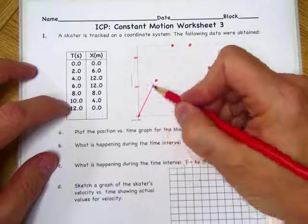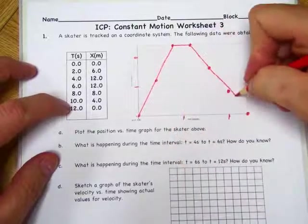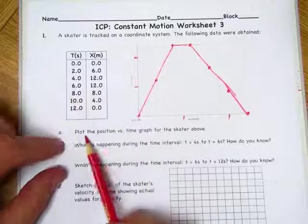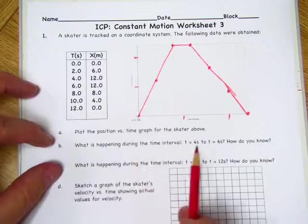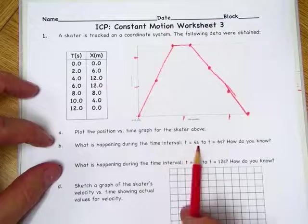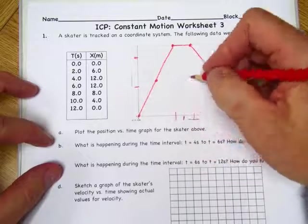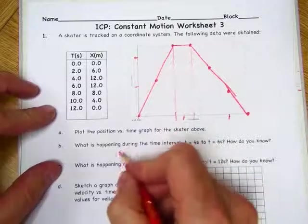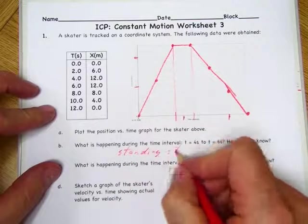So we'll just go ahead and connect all these dots. All right, so we did A. We plotted the position versus time graph from the skater. What's happening during the time interval 4 seconds to 6 seconds? Well, the skater is standing still.